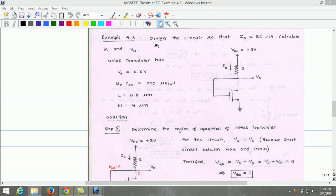This example is different from the examples discussed earlier. In this problem, we need to design the circuit for the drain current as 80 microamps. Further, we need to calculate R and Vd values. For the n-MOSFET transistor, the data given is as follows: the threshold voltage of the transistor is 0.6 volts, process transconductance parameter is 200 microamps per volt squared, length of the transistor is 0.8 micrometers and the width of the transistor is 4 micrometers.